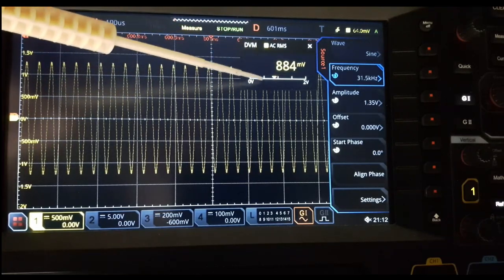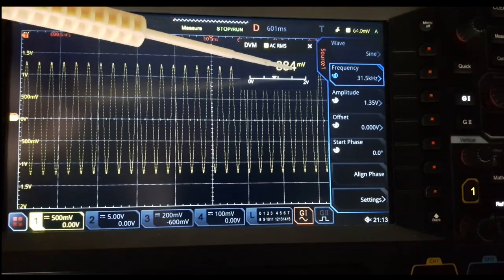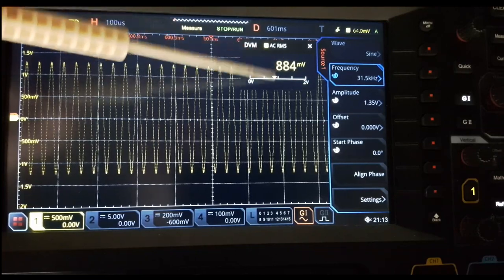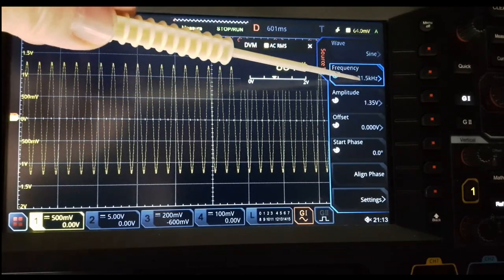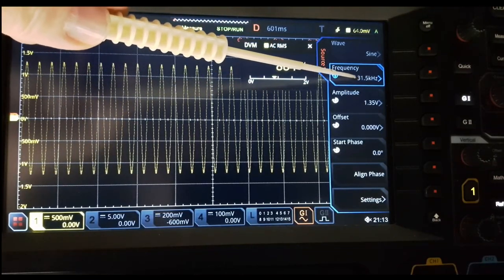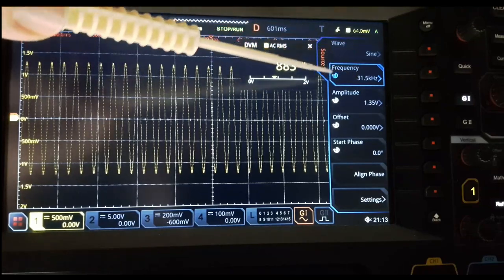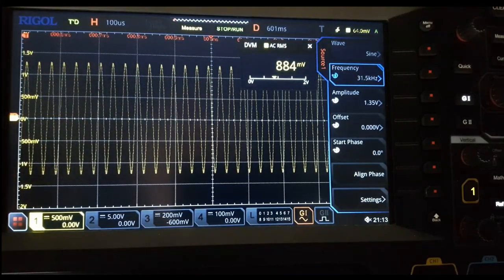Because we could change that 1k resistor and that number would change whatever value we picked. The 1k resistor was just a convenient value. So we were just simply looking for the maximum of this. And what we're trying to find out is this frequency right here, the 31.5 k. So we'll throw that into our formula. And that'll tell us what size of inductor we have.